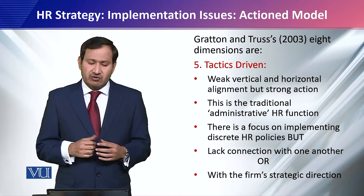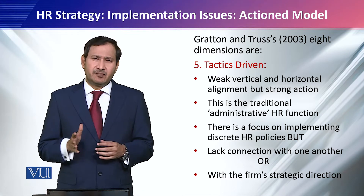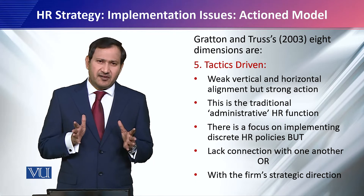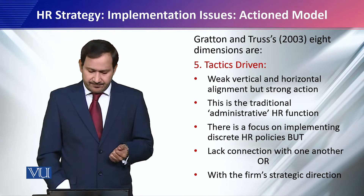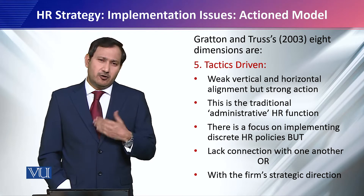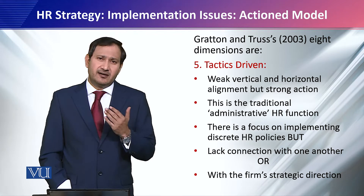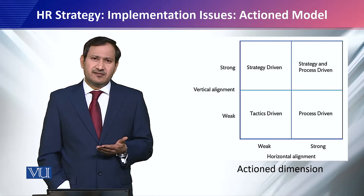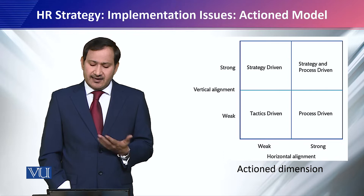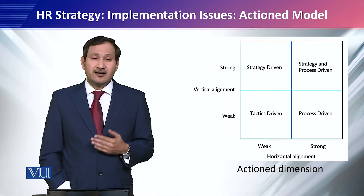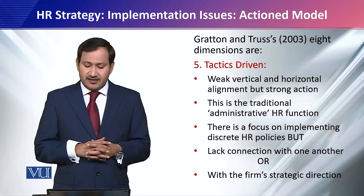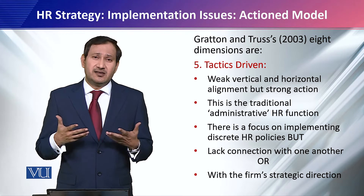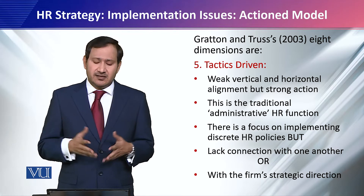Grattan and Trust 2003 identified 8 dimensions. The 5th dimension — because we have talked about 4 dimensions in the last module — is tactics driven. Going back to the slide, tactics driven lies on the left-hand side at the bottom of the diagram. Clearly, it represents weak horizontal alignment and also weak vertical alignment, consistent with what the diagram suggests.